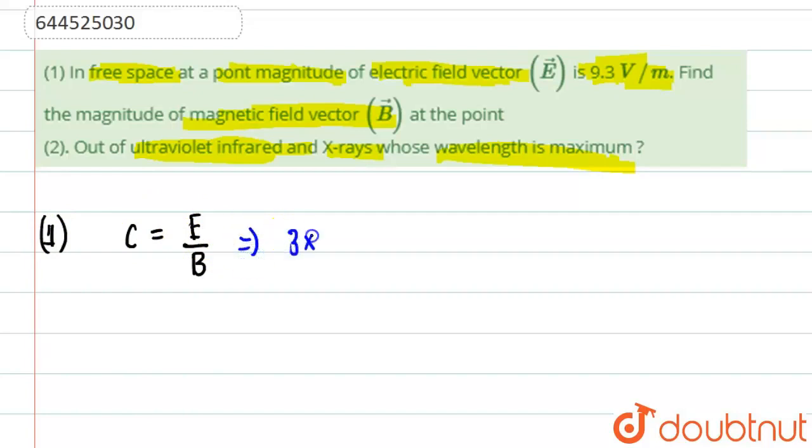So C is 3 times 10 to the power 8 equals E, the electric field, which is 9.3 divided by B, the magnetic field. So from here, we will get magnetic field equal to...